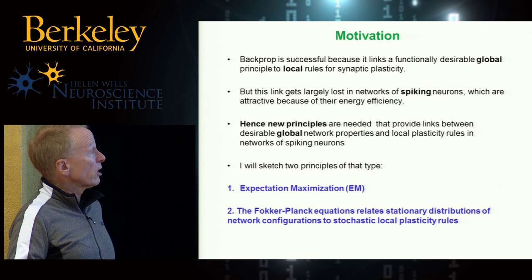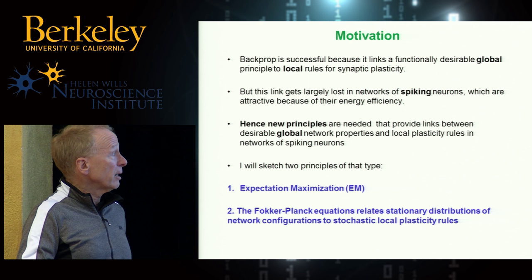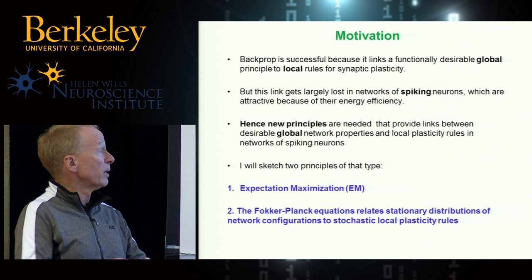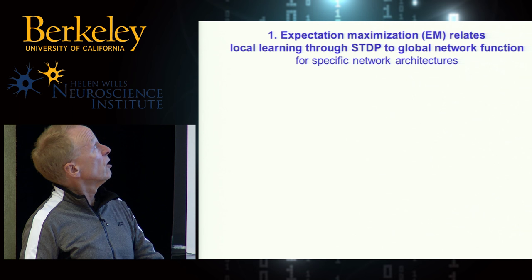Very concretely, I want to sketch two principles. One is expectation maximization, EM, and another one related to using the Langevin or Fokker-Planck equation. Both of these are actually very old principles that have not been considered much in the context of spiking networks.